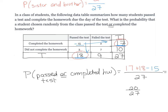That should make sense because we've included all cells: people that did both, people that just completed the homework but didn't pass the test, and people that passed the test but didn't complete the homework. We did not include those 7 people, and 20 plus 7 equals the complete 27.